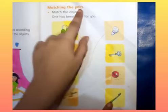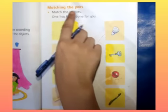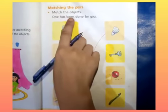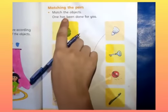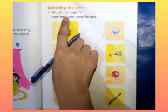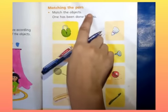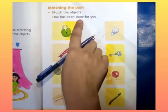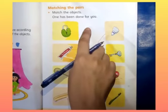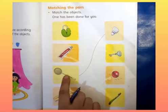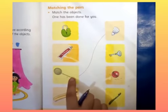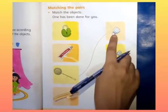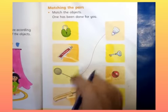Matching the pairs. Match the objects. One has been done for you. Matching the pairs requires match pairs that are the same. One has been done for you means one example is already done. This is shuttlecock. This game is happening, you know that racket and shuttlecock. These are the things that help one another work.